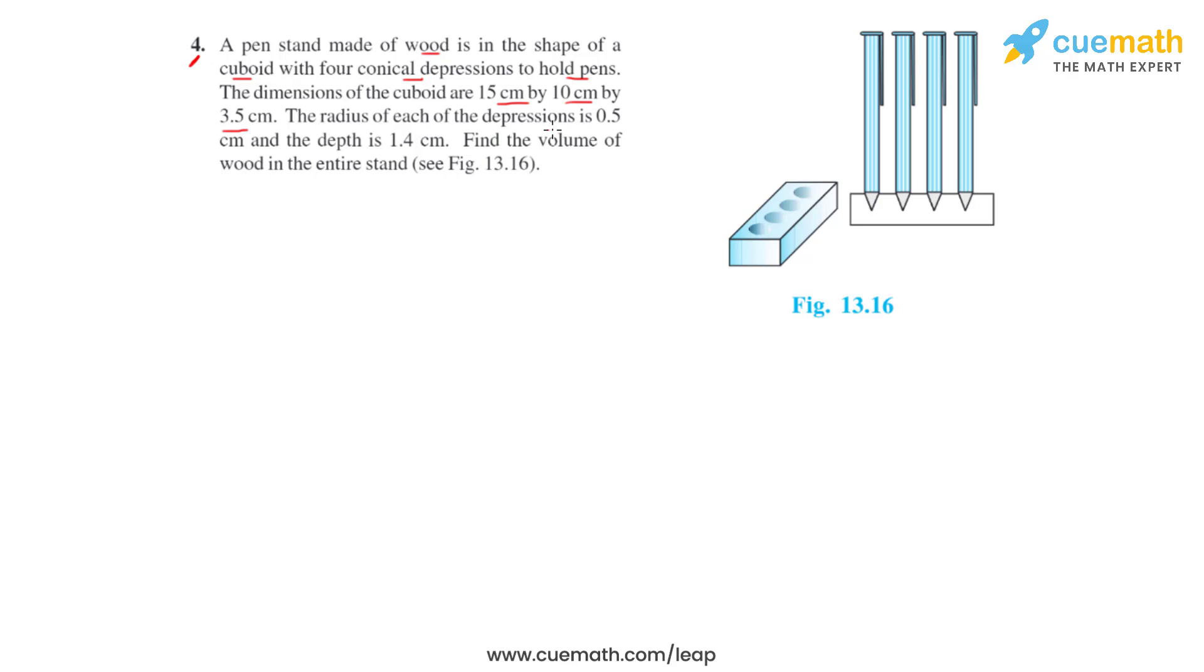The radius of each of the depressions is 0.5 cm and the depth is 1.4 cm. We have to find the volume of the wood in the entire stand as shown in figure 13.16.